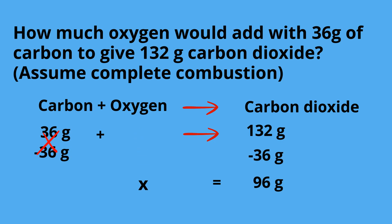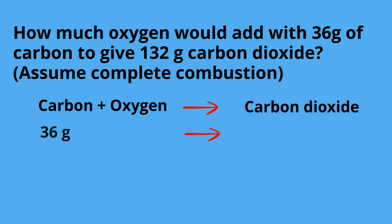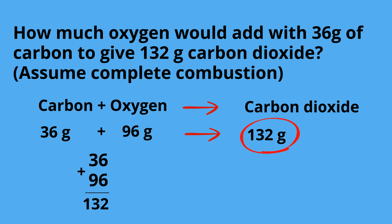Plug it back into the original: the mass of carbon is 36, the mass of oxygen is 96. Add these two together and it equals 132 grams of carbon dioxide.